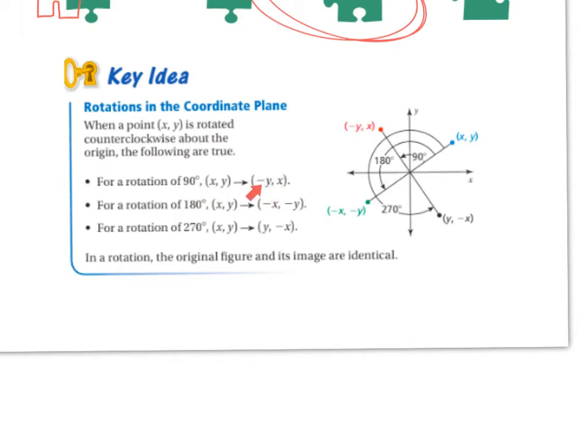They just switch and the first number, the new number, changes its sign. If you're doing a 180, then they stay where they are but they just turn their sign. So if they were positive, they turn negative. If they were negative, they turn positive. And for a 270, they switch, but then the new second number changes its sign.